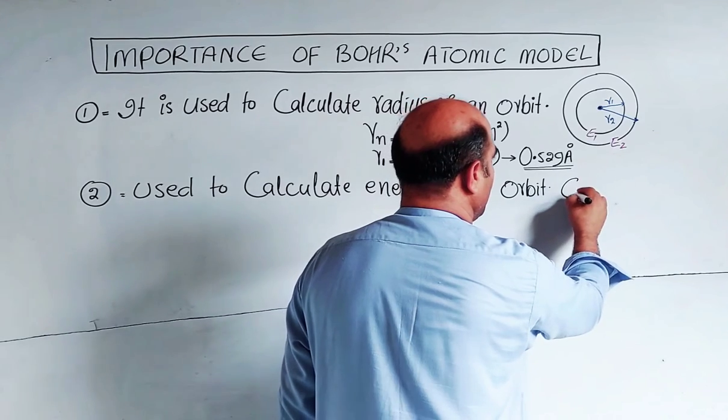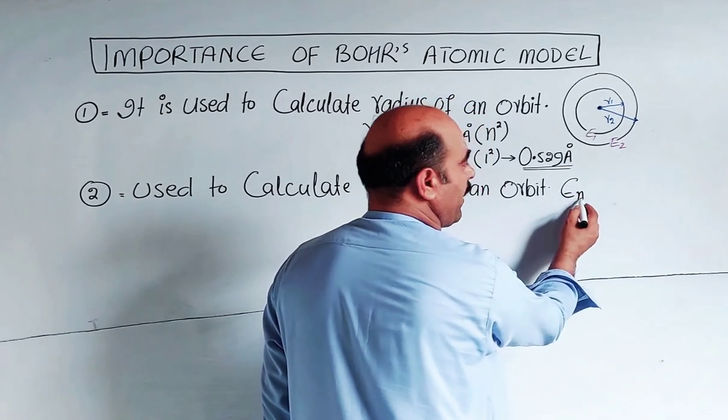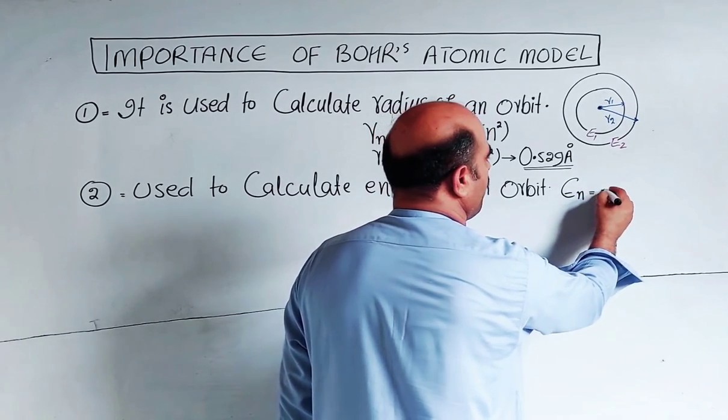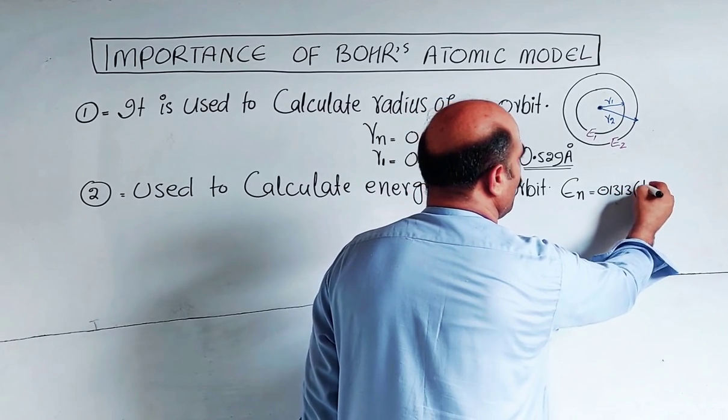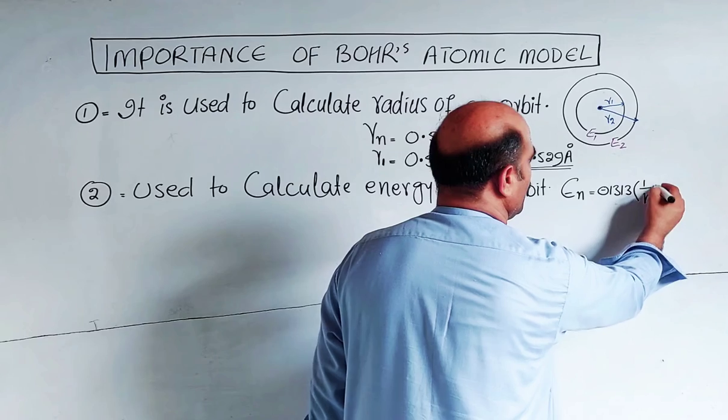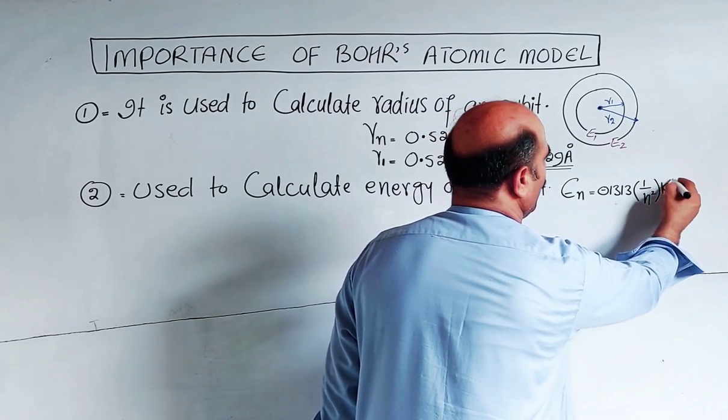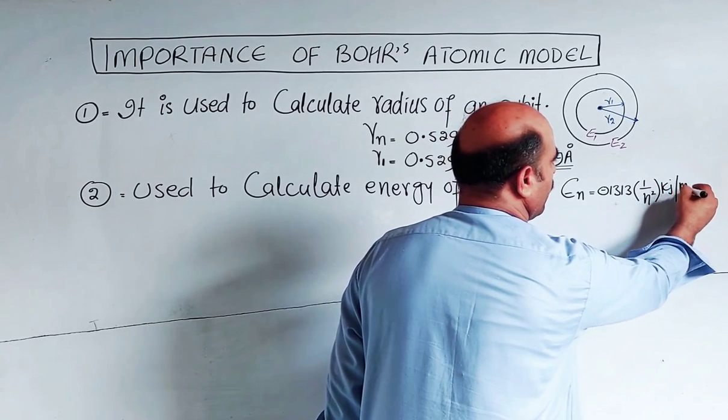The formula is: E_n, energy of any orbit n, equals minus 1313 times one over n squared kilojoules per mole.